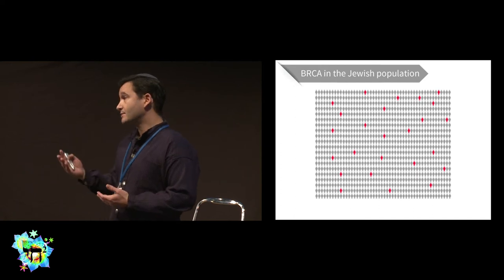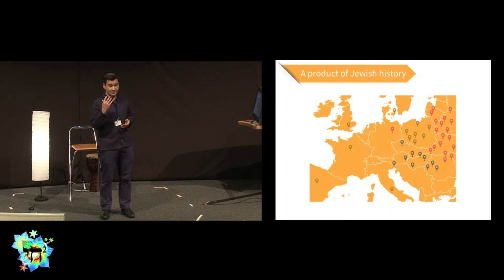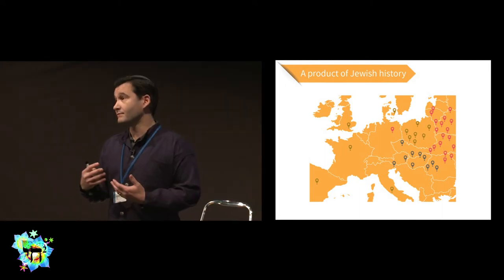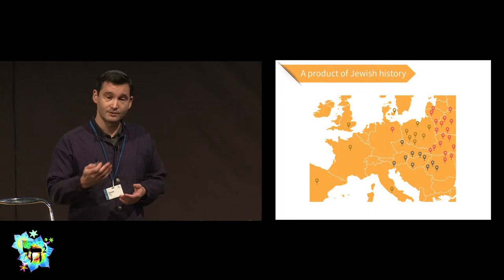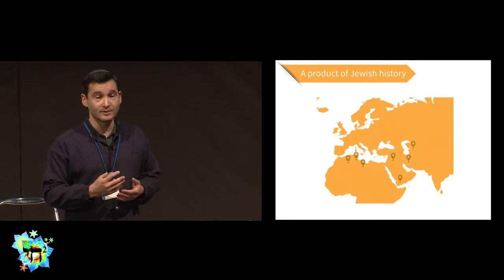Why is this? Interestingly, it is a consequence of Jewish history because Jewish communities, to some extent, chose and to some extent, were forced to live separately. Because of that, the genetic variation was less than other ethnic groups. This is true for Ashkenazi Jewish people, but in many cases, it is also true for Sephardi and Mizrahi communities.